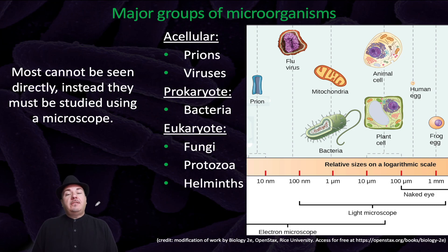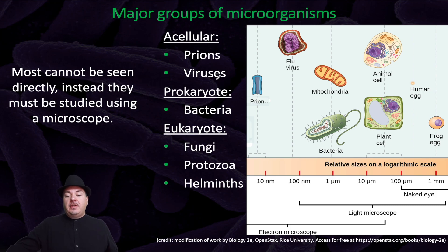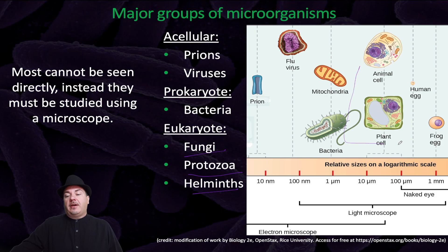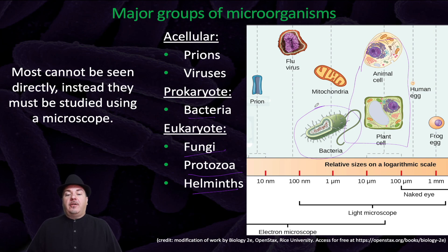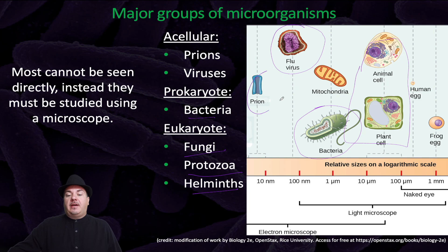Using a light microscope, you can easily see things like animal cells and plant cells. Eukaryotic microorganisms we can see with a light microscope include fungi and protozoa. Helminths you can actually see with your eyes — you don't need a light microscope, at least for their adult versions. Much smaller than eukaryotic cells are the prokaryotic cells like bacteria, and we can still see the vast majority of bacteria using a light microscope. Smaller than that — viruses and prions — we can't see with our naked eyes; we need to use an electron microscope.